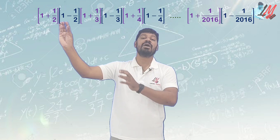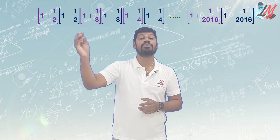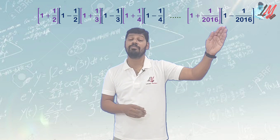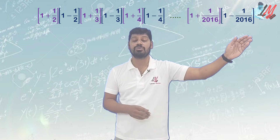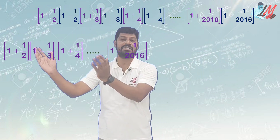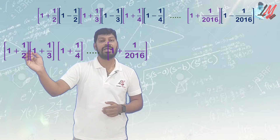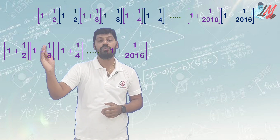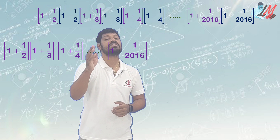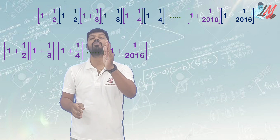Now, some grouping is needed. We have the terms: (1 plus 1/2), (1 plus 1/3), (1 plus 1/4), up to (1 plus 1/2016). If we group: (1 plus 1/2) into (1 plus 1/3) into (1 plus 1/4) and so on up to (1 plus 1/2016).